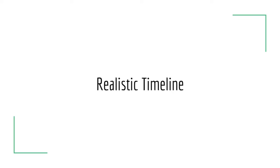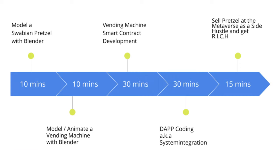Let me say a little bit about the timeline of this course. I will start with the modeling of the Swabian Pretzel in Blender, then model the pretzel vending machine and try to animate some sequences. After that we design and implement the business logic of the vending machine as a smart contract in Solidity. What follows is putting everything together in the form of a pretzel Dapp.